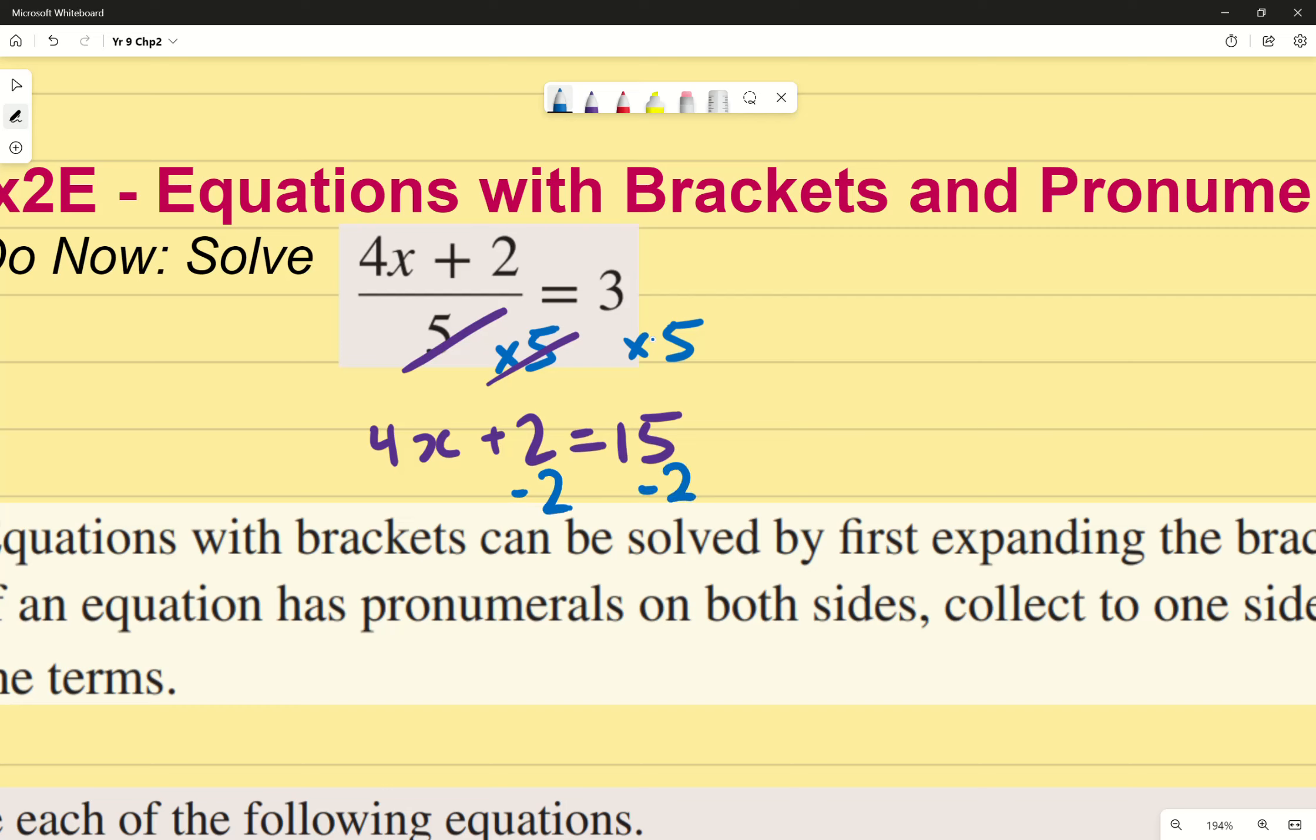So to get rid of the plus 2 I'm going to minus 2 on both sides, so we end up with minus 2 minus 2. These two cancel out and I end up with, I'm going to write it over here because I've run out of space.